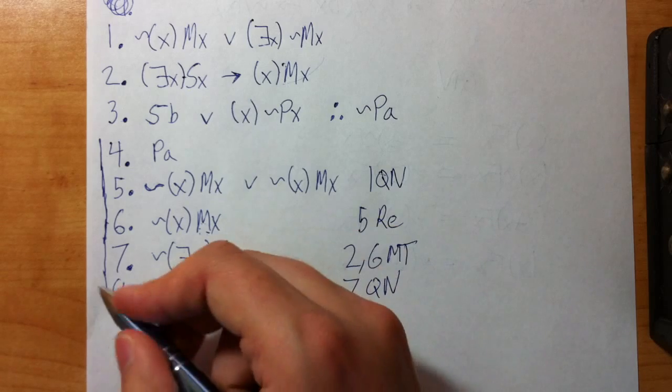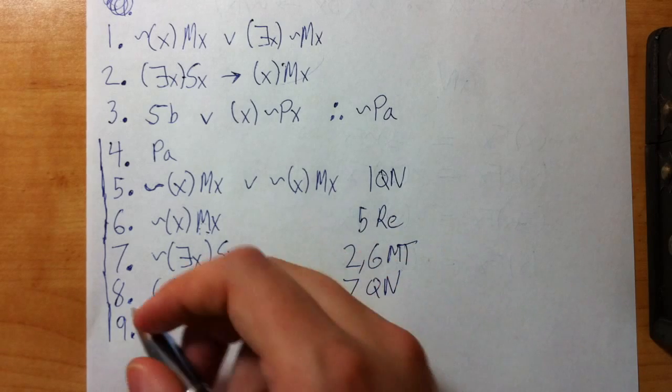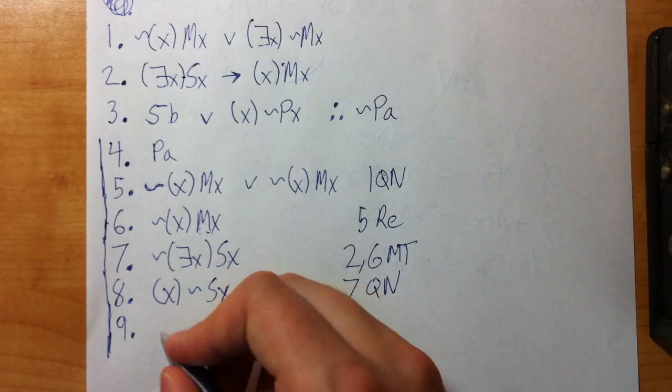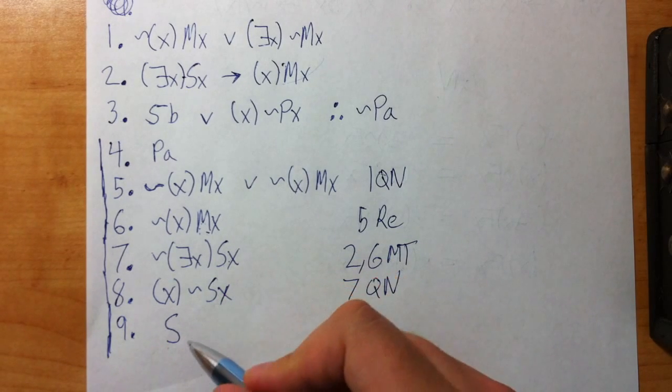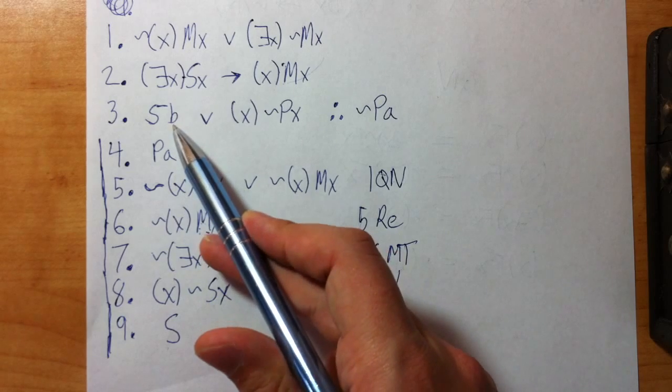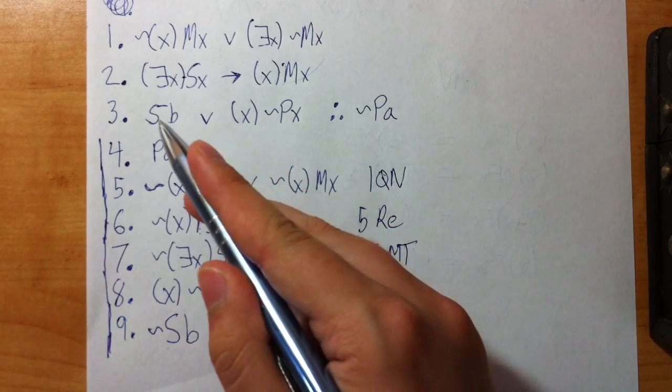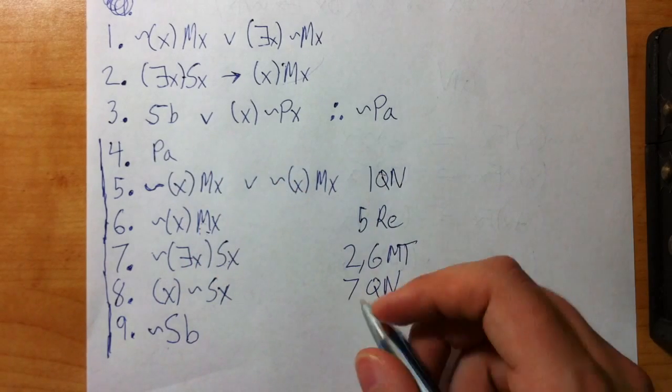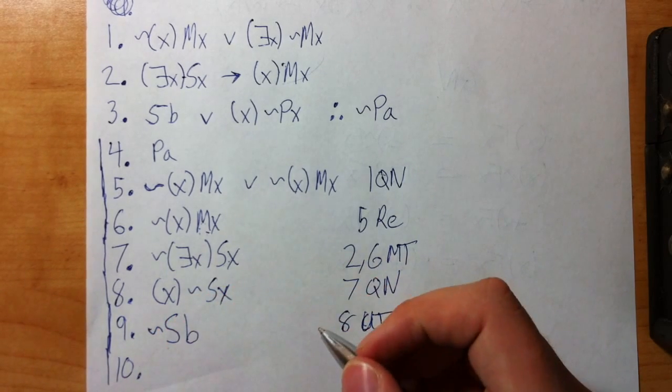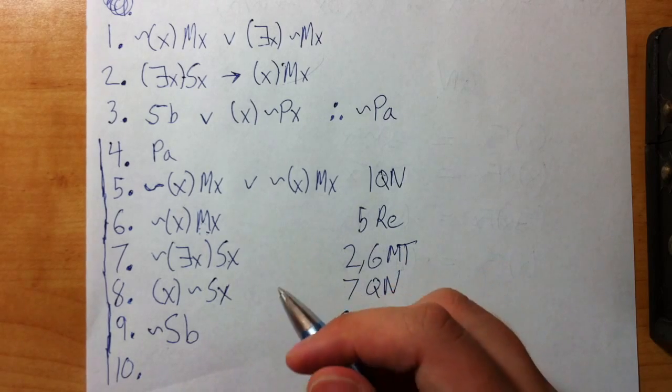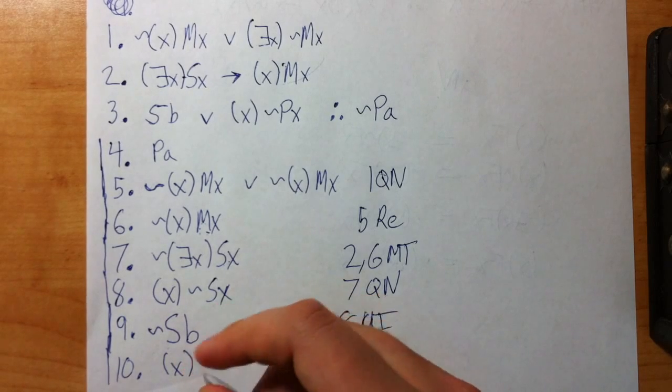So in QN, now I've got both versions. Well, look at that. This is a really useful instance of QN because now I can actually do UI to that line. So with UI, I could pick any name I want to go in that X. But what name should I choose? I could choose A if I wanted to. But I'd rather choose B because by doing that, by putting a B there, I can actually work with that SB. So 8 UI. So looking at the match I have on line three and nine, DS. So that lets me get the right side of line three.